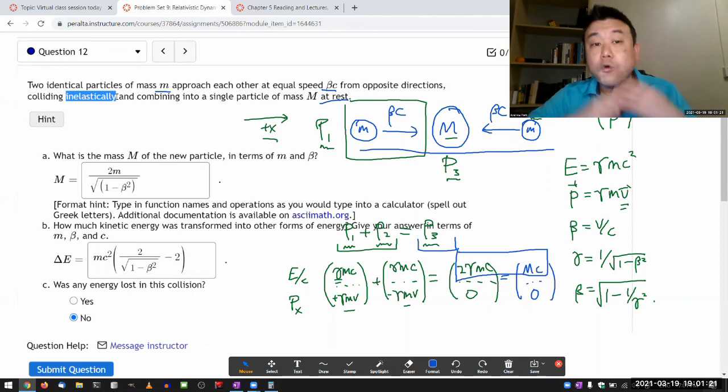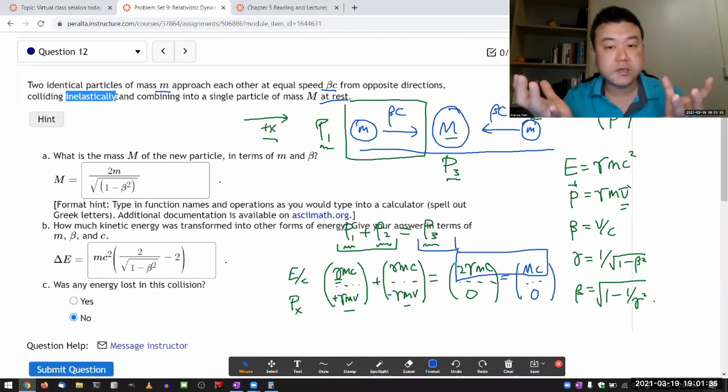In non-relativistic mechanics, when we say the total mechanical energy, it only included the kinetic and potential energy. You could have energy being transformed into other stuff. Now in special relativity, rest energy includes everything—it's like a net energy of everything.